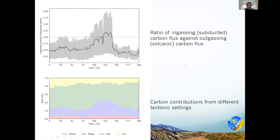The first figure here shows that the ratio of ingassing carbon to outgassing carbon generally lies below one, suggesting significantly more outgassing. The second figure shows that continental rifts seemingly dominate the contributions from volcanic settings. However, this might just appear that way because of the current uncertainties in quantifying continental rift fluxes.